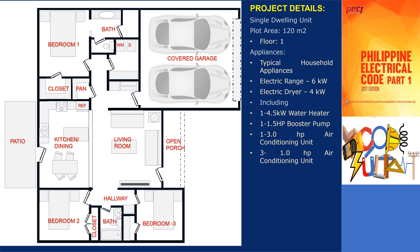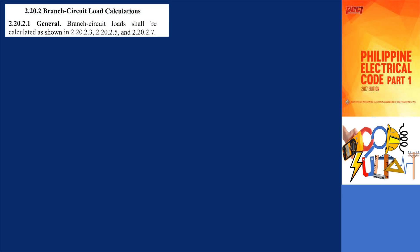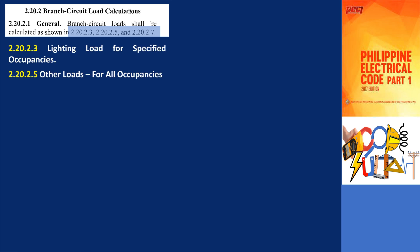To calculate the branch circuit load as in article 2.20.2, section 2.20.2.1 states that branch circuit loads shall be calculated as shown in 2.20.2.3, 2.20.2.5, and 2.20.2.7. These are lighting load for specified occupancies, other loads for all occupancies, and loads for additions to existing installations.